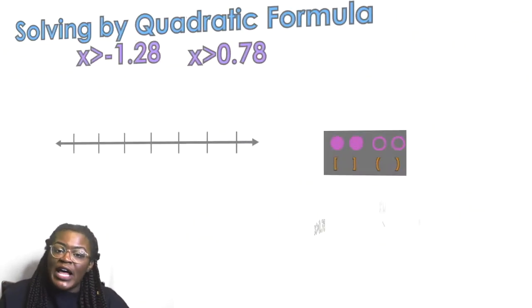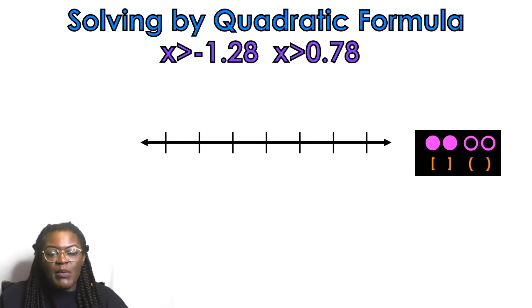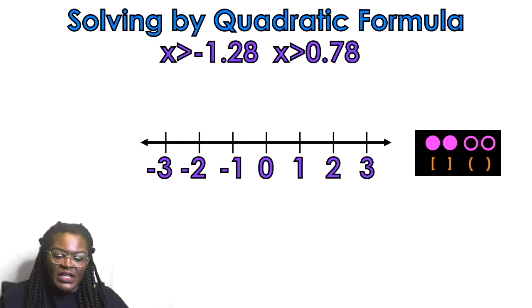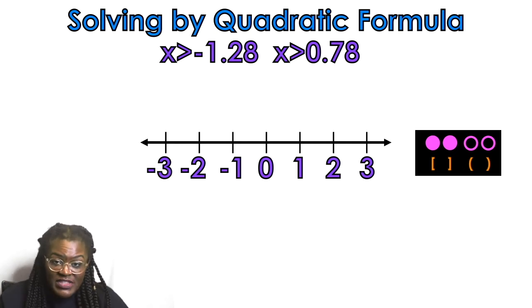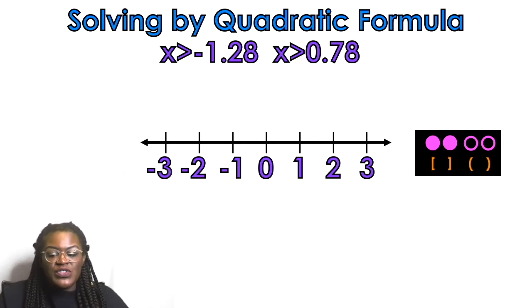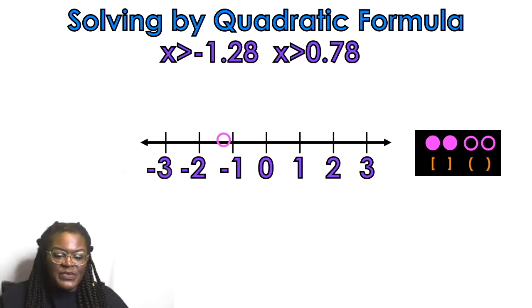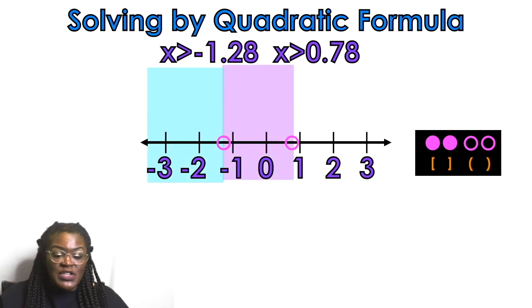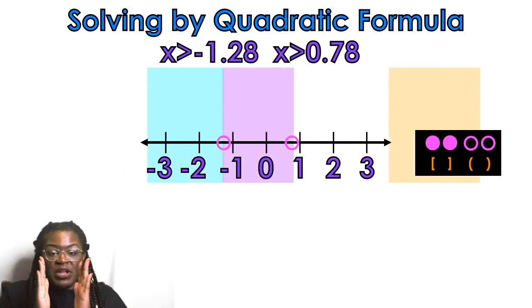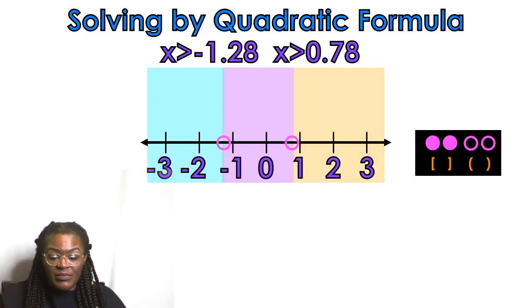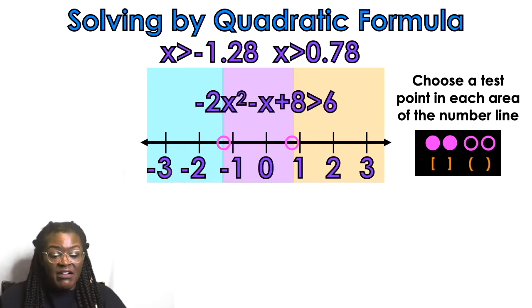We take those two values — negative 1.28 and 0.78 — to our number line, ordered least to greatest. We need to decide: open circles or closed circles? We're using closed circles at approximately negative 1.28 and positive 0.78. There's a blue area, a purple area in between the two solutions, and an orange area. We choose a test point in each area.